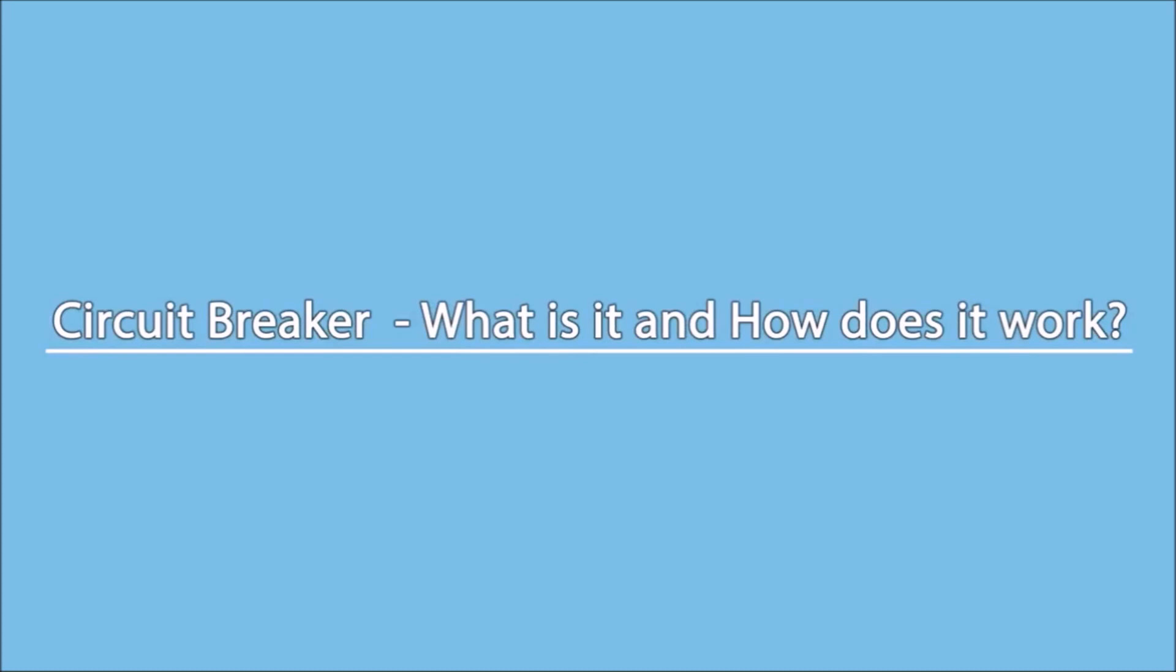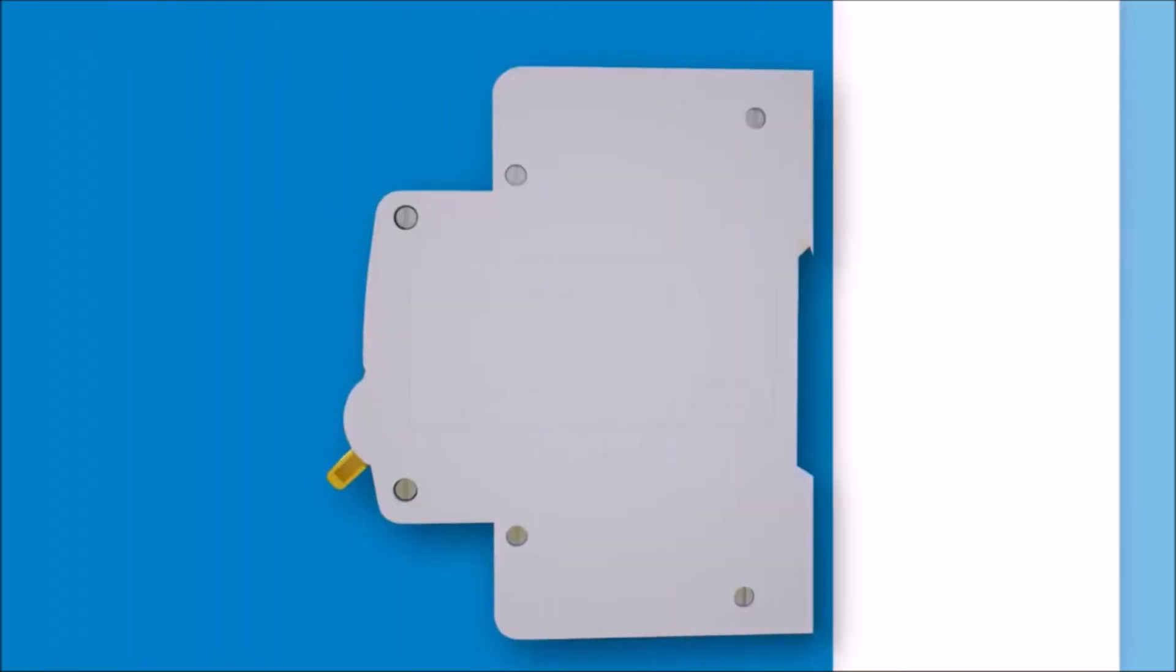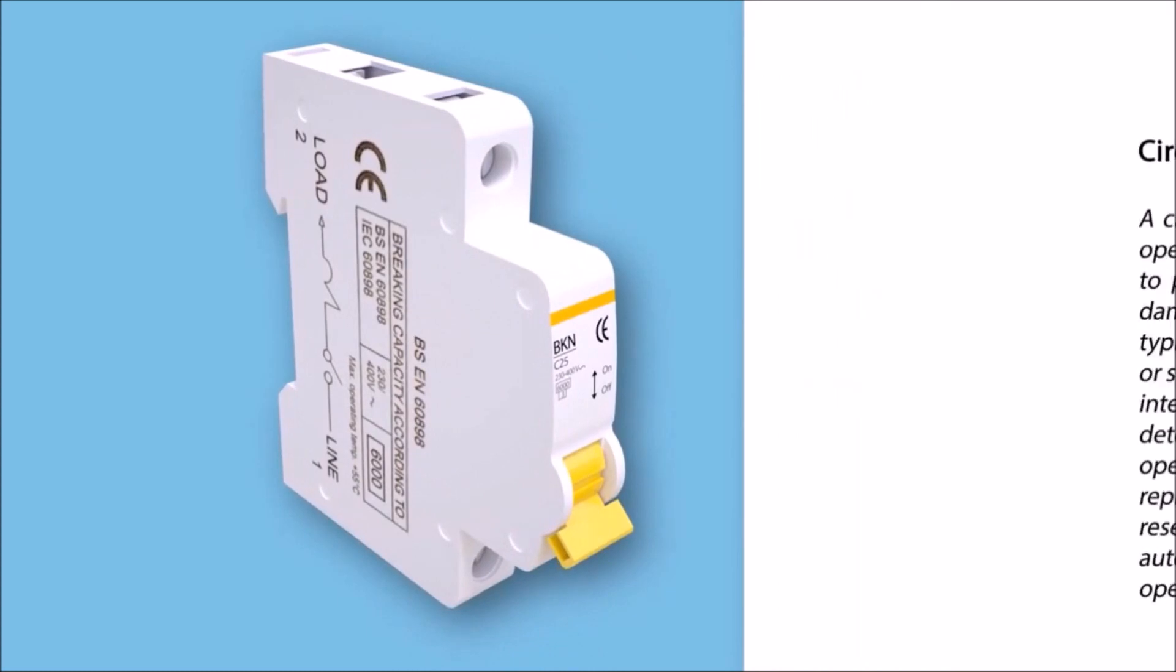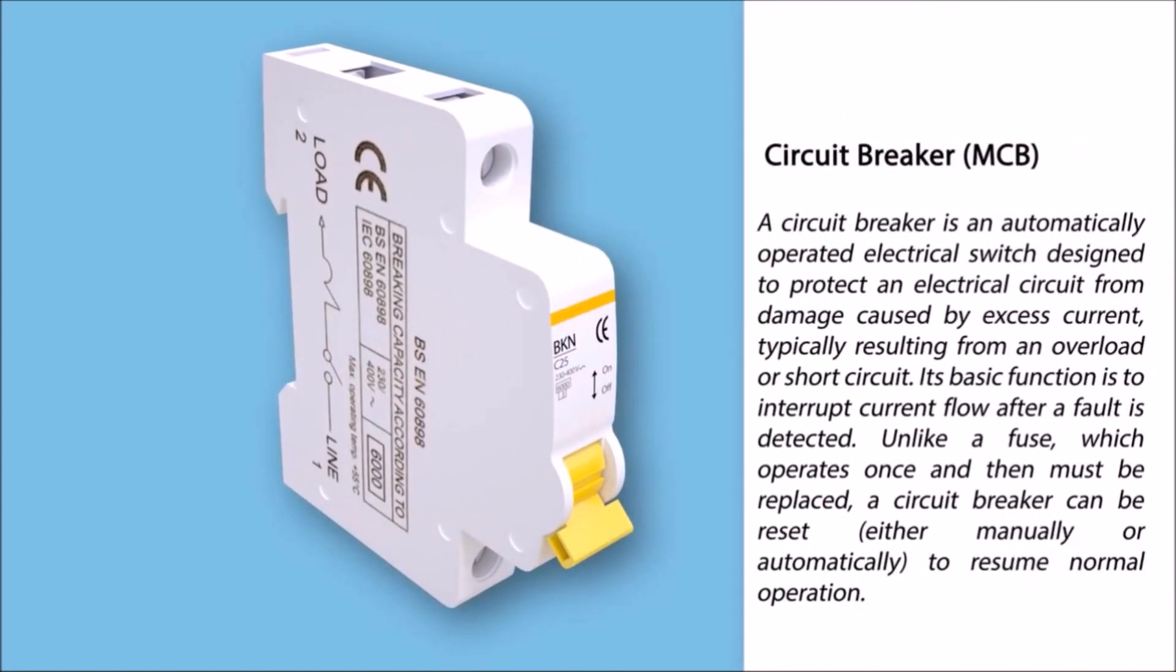Circuit Breaker: what is it and how does it work? A circuit breaker is an automatically operated electrical switch designed to protect an electrical circuit from damage caused by excess current, typically resulting from an overload or short circuit. Its basic function is to interrupt current flow after a fault is detected.